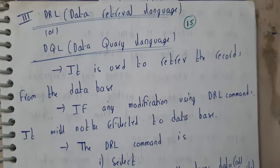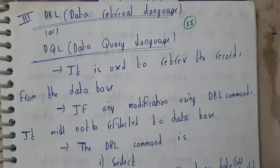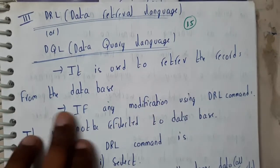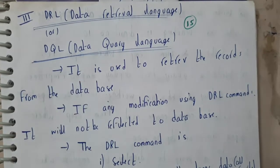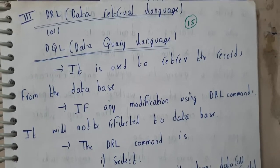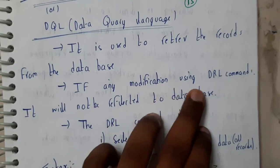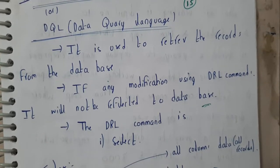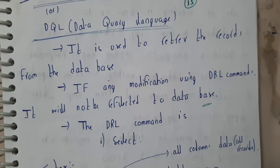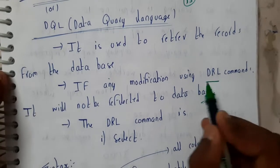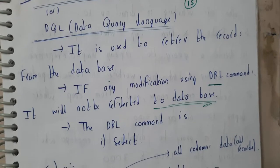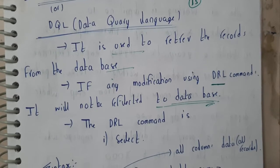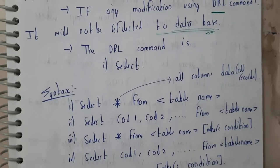In this tutorial, let us go through DQL, that is Data Query Language. It is used to retrieve the records from the database. If any modification is done using DQL commands, it will not reflect in the database. These DQL commands are only used to retrieve and get the data from the database.